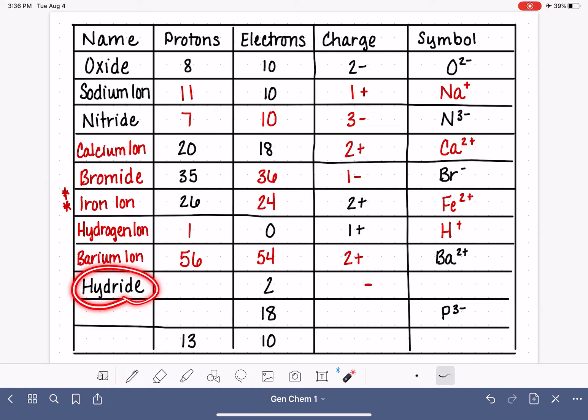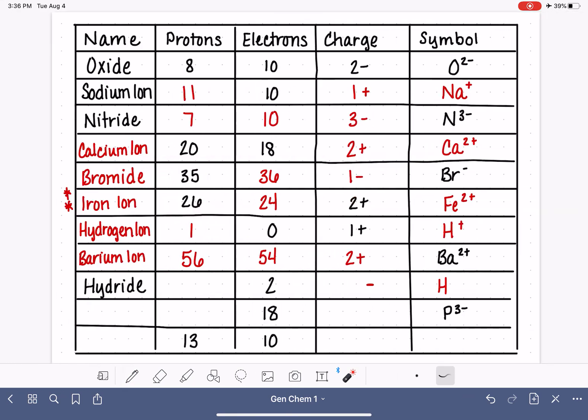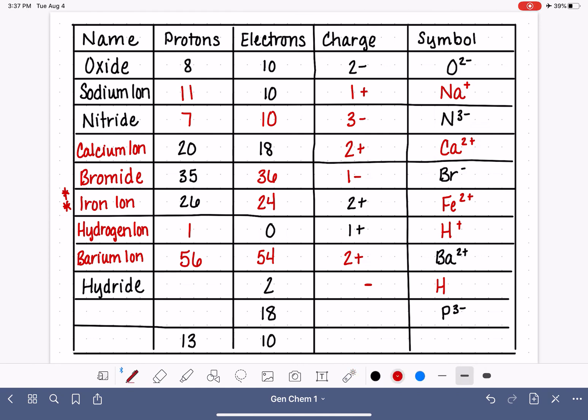Hydride is the anion of hydrogen. How many protons do we have in hydrogen? Hydrogen, we actually just worked with hydrogen. Hydrogen has 1 proton. So 1 proton with 2 electrons. This is a 1 minus charge. So this is the hydride ion.